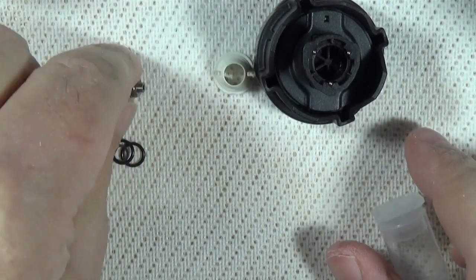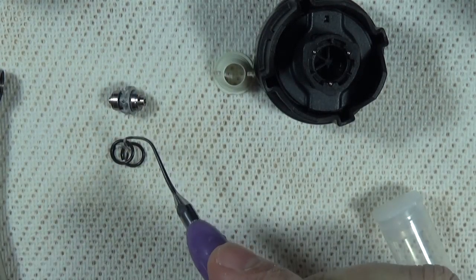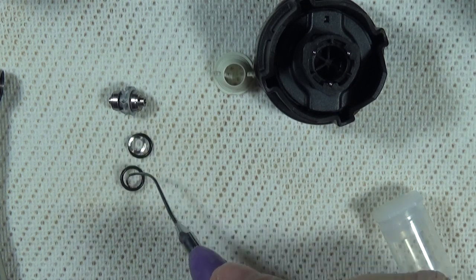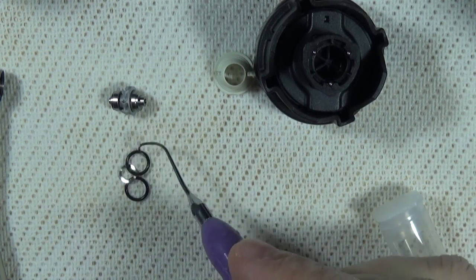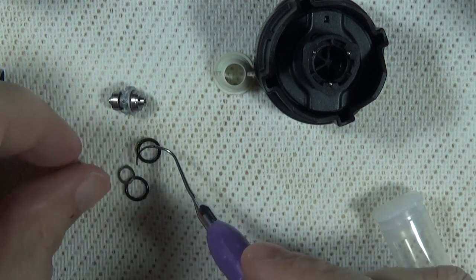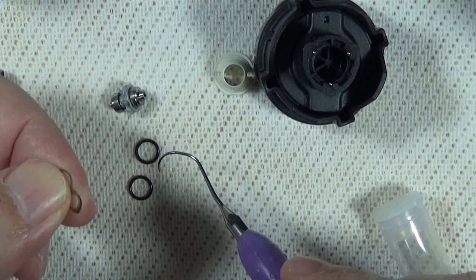So we'll open our little vial here and get our new parts out. We should have the new turbine, two new o-rings here.